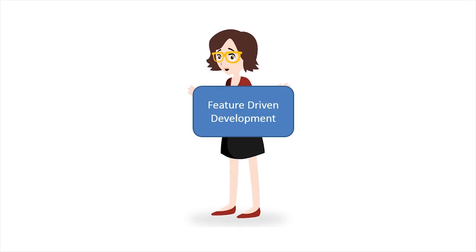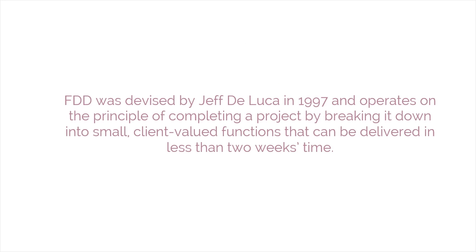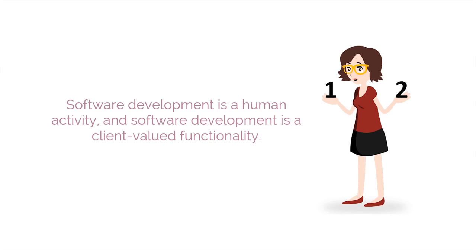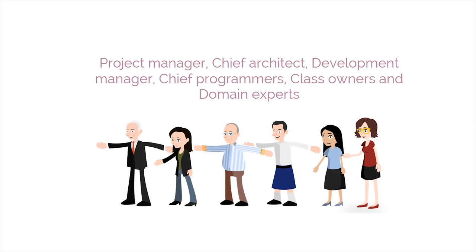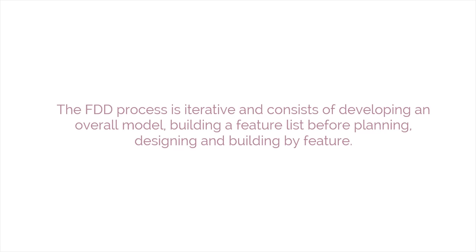The fifth method is Feature-Driven Development. FDD was devised by Jeff DeLuca in 1997 and operates on the principle of completing a project by breaking it down into small, client-valued functions that can be delivered in less than two weeks' time. FDD has two core principles: software development is a human activity, and software development is client-valued functionality. FDD defines six major roles: project manager, chief architect, development manager, chief programmers, class owners, and domain experts, in addition to a number of supporting roles. The FDD process is iterative and consists of developing an overall model, building a feature list, planning, designing, and building by feature.